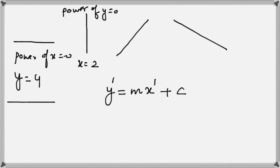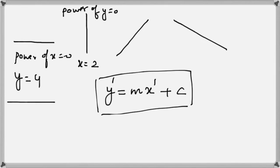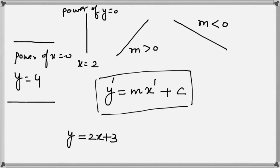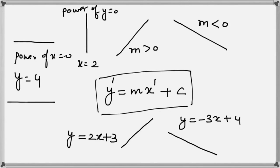For an increasing or decreasing line, look at the equation y = mx + c. If the value of m is greater than 0, you get an increasing line. If the value of m is less than 0, you get a decreasing line. So y = 2x + 3 gives an increasing line, and y = -3x + 4 gives a decreasing line.